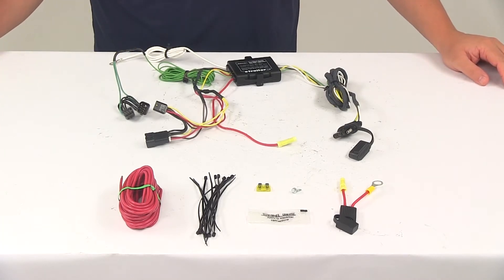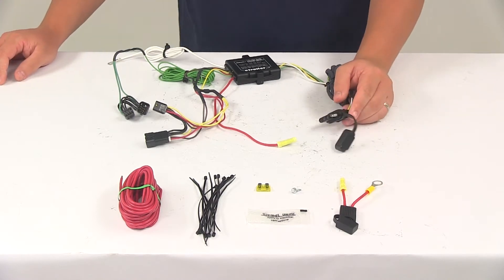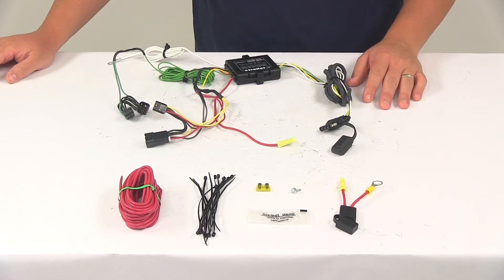Today we're going to be taking a look at the Hopkins plug-in simple vehicle wiring harness with the four-pole flat trailer connector. This product fits a 2008 to 2010 Saturn Vue.